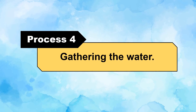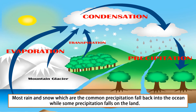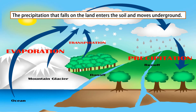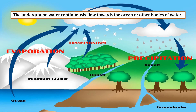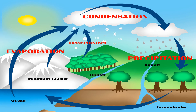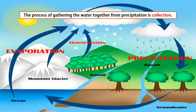Process 4: Gathering the water. Most rain and snow, which are the common forms of precipitation, fall back into the ocean, while some precipitation falls on land. The precipitation that falls on land enters the soil and moves underground, adding to the groundwater, which is known as drinking water. The underground water continuously flows toward the ocean or other bodies of water, where another water cycle begins. This process of gathering water from precipitation is called collection.